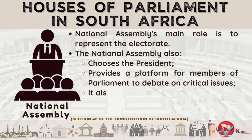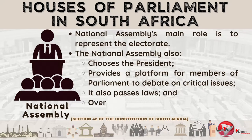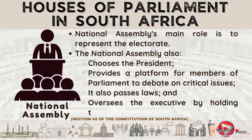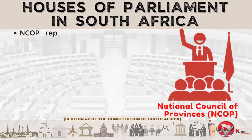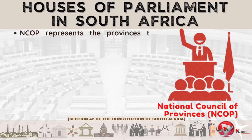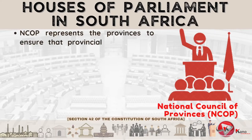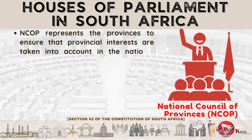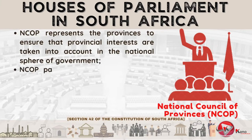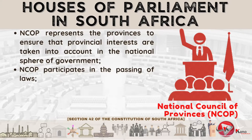Members of the National Assembly also debate and pass laws, as well as oversee the executives in government by holding them accountable. The National Council of Provinces, on the other hand, represents the provinces to ensure that provincial interests are taken into account in the national sphere of government. Members also participate in the passing of laws in certain circumstances.